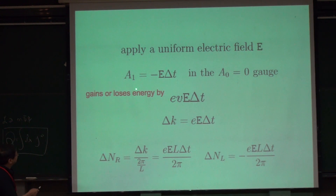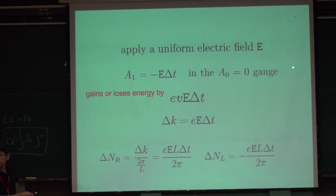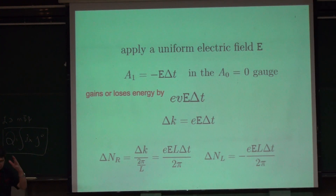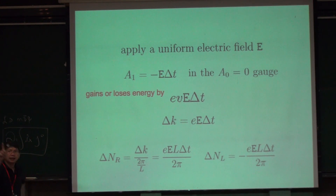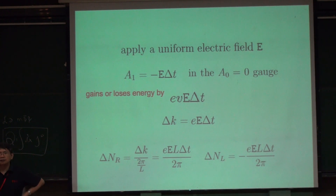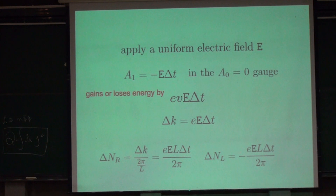We consider a system in the presence of electric field E. I choose A0 equal to 0 gauge. And A1 will be related to E — the magnitude of the electric field — because E is minus dA by dt, or dA1 by dt. This is the standard E and M formula. So this is a one-dimensional system with an applied electric field E.